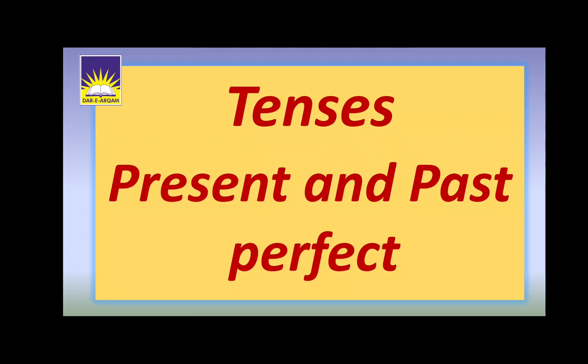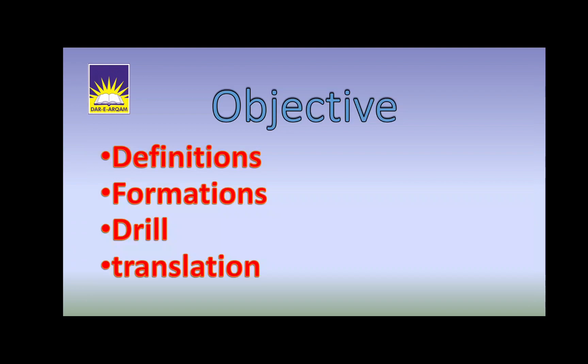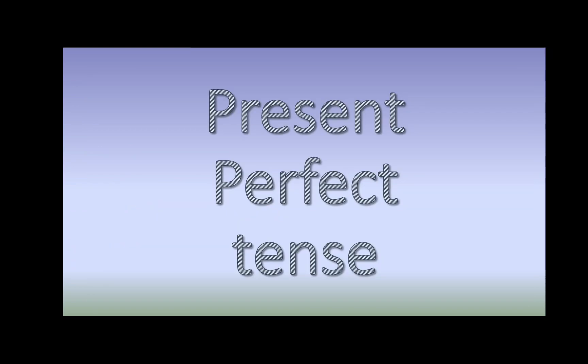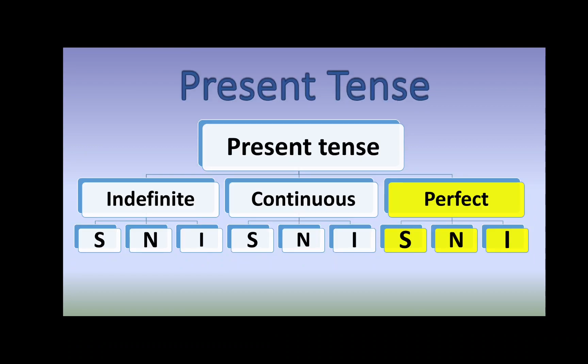Our objectives are definitions, formations, drill, and most importantly translation. So let's start with the present perfect tense. Present perfect tense is the last type of the present tense among the three tenses. So let's start with the examples.